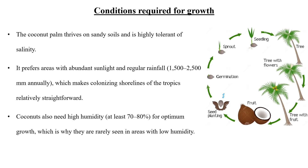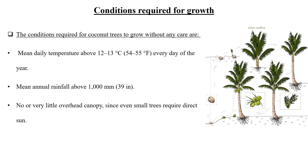The conditions required for the growth of coconut are: coconut palm thrives on sandy soils and is highly tolerant of salinity. It needs higher humidity around 70-80% for optimum growth. It prefers areas with abundant sunlight and regular rainfall. The adjacent picture shows the life cycle of the coconut. Conditions required for growth include a mean daily average temperature of 12-13 degrees Celsius and rainfall of about 39 inches.